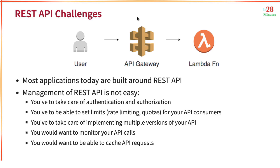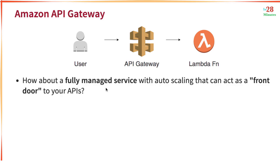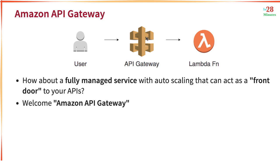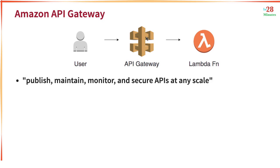To improve performance, you would also want to cache your API requests. So where should you implement all these features? How about a fully managed service with auto scaling that can act as a front door to your APIs? That's what Amazon API Gateway is all about. For example, you have a Lambda function where your core logic behind your REST API is, and you can use API Gateway to add all the features typically needed by your REST APIs.